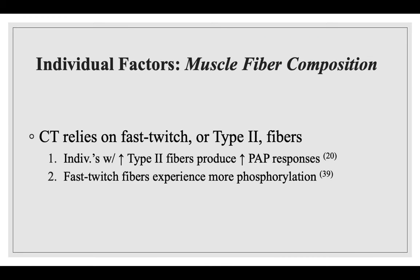When looking at the type of exercises performed in complex training, there is a high need for force, speed, and power in a short period of time — associated with fast twitch or type 2 fibers. Thus, in theory, if an individual possessed more of these fibers, they'd display a greater PAP response. One study found subjects with more type 2 fibers in their knee extensors exhibited greater PAP responses, and another indicated that fast twitch fibers undergo more phosphorylation than slow twitch fibers.